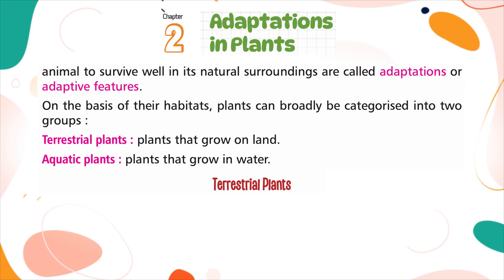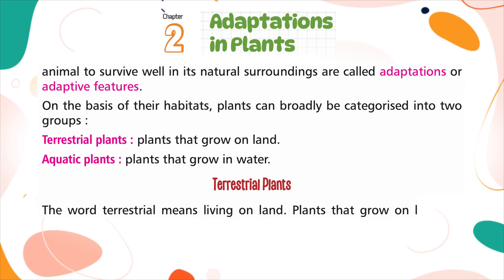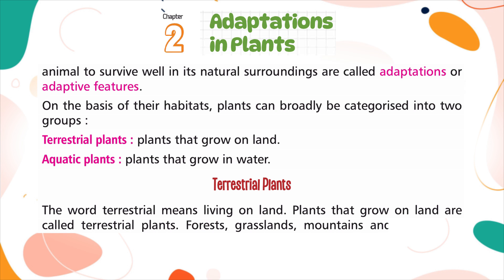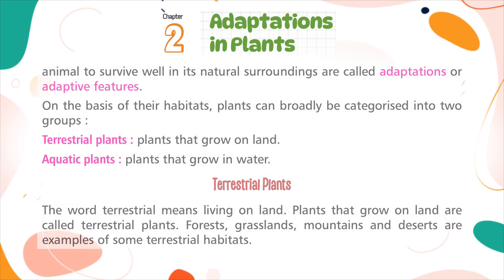Terrestrial Plants. The word terrestrial means living on land. Plants that grow on land are called terrestrial plants. Forests, grasslands, mountains, and deserts are examples of some terrestrial habitats.